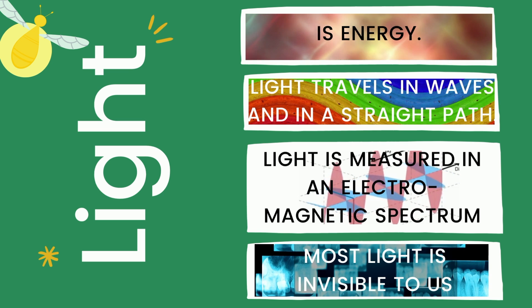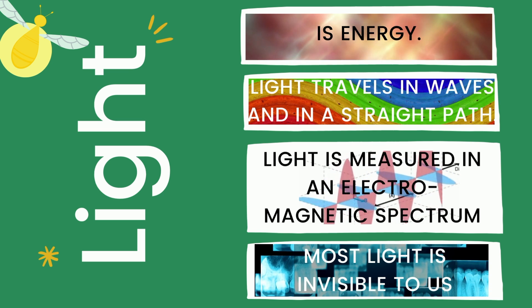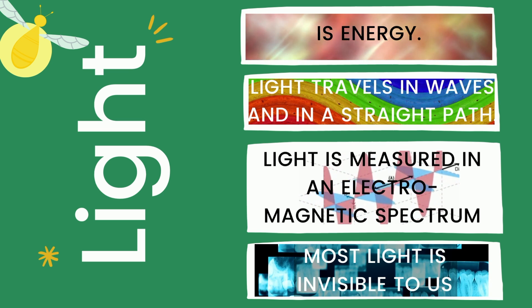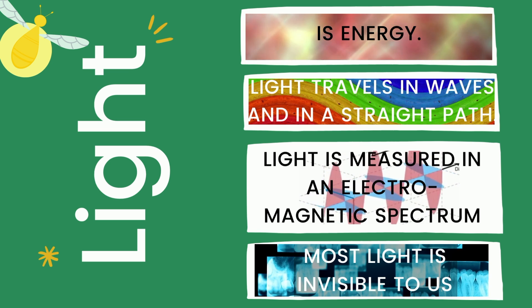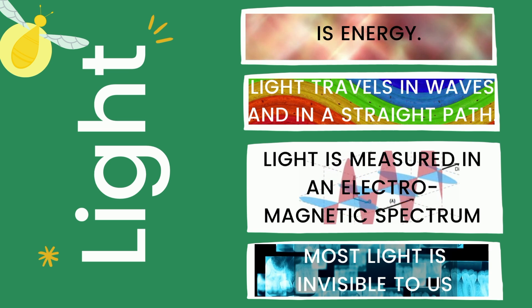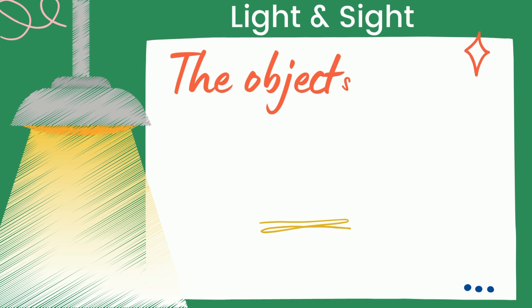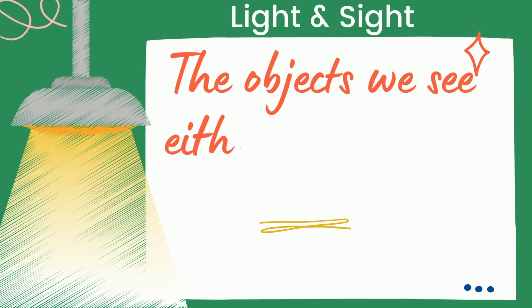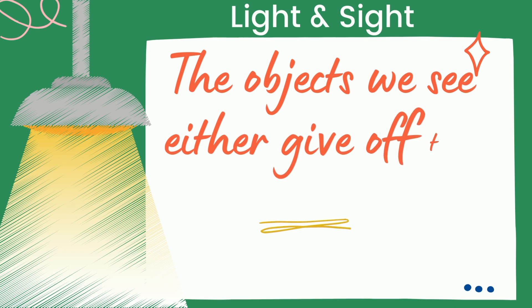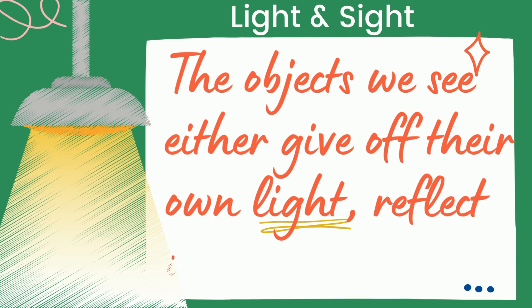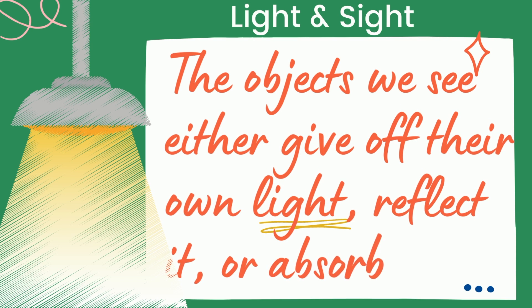The electromagnetic spectrum would include all sorts of light like gamma rays, x-rays, UV rays. Just a small part of that spectrum is visible to us. In this video, we're going to talk about how light relates to sight.